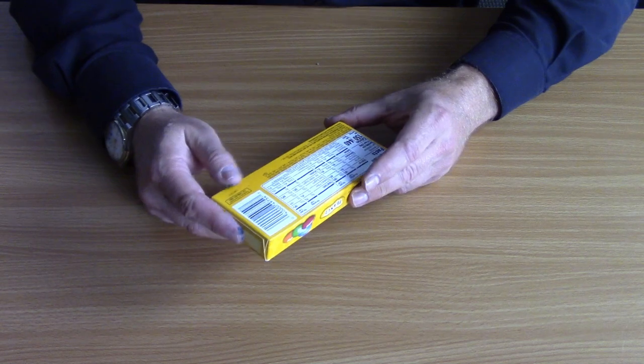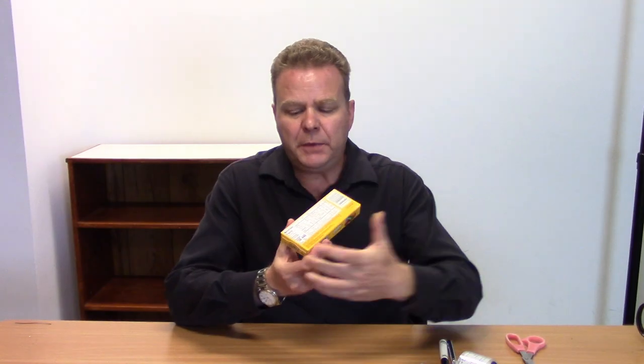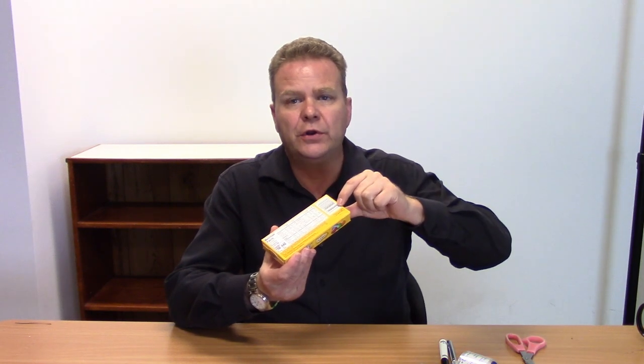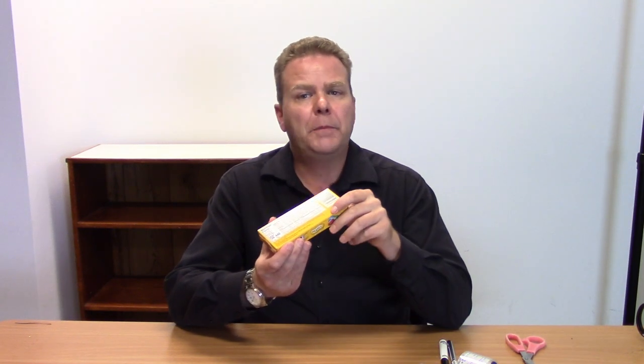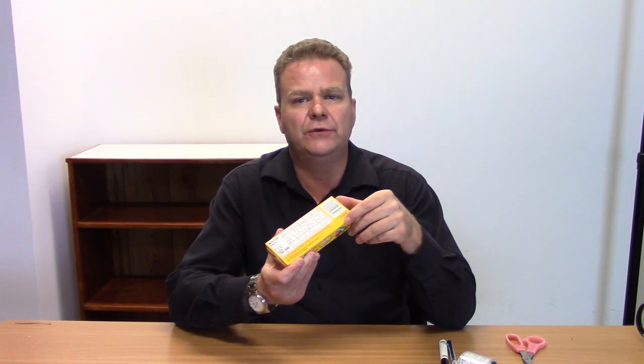Before I explain what a spectroscope is, let me tell you the materials that you'll need in order to make your very own spectroscope. The first thing you'll need is a small box, like a candy box. This box is about six inches long, two and a half inches wide, and three quarters of an inch thick. Your box does not have to be exactly that size, but this is a size I found to be pretty good.